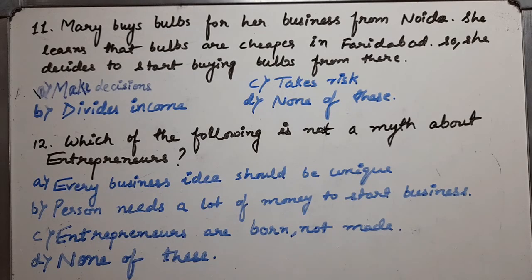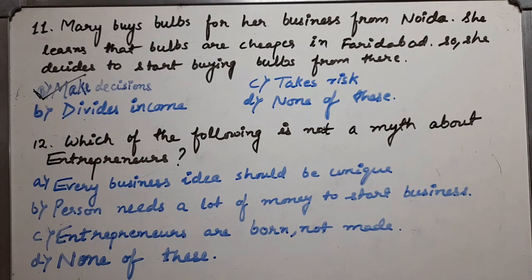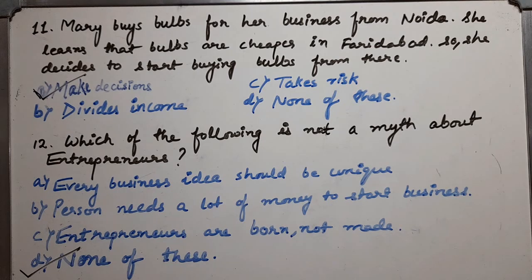Eleventh MCQ: Mary buys bulbs for her business from Noida. She learns that bulbs are cheaper in Faridabad, so she decides to start buying bulbs from there. She has made a decision, so the correct option is 'make decisions.' Twelfth MCQ: Which of the following is not a myth about entrepreneurs? Option A — every business idea should be unique — is a myth, because one can start with a common idea. Option B — a person needs a lot of money to start a business — is also wrong, as one can start with little money. Option C — entrepreneurs are born, not made — is also wrong. So the answer is none of these, because all of them are myths. This is a very important topic from the entrepreneur chapter and can be asked in exam questions, so you should prepare it.